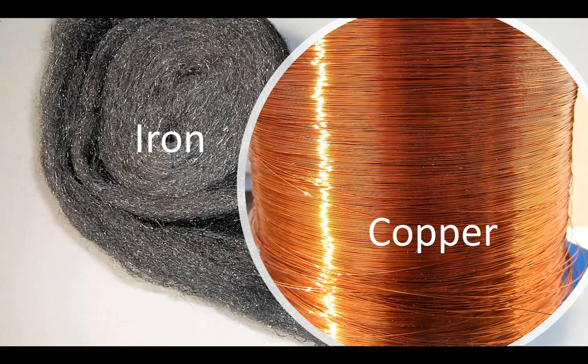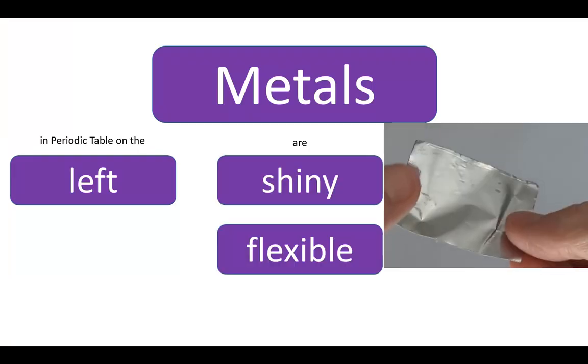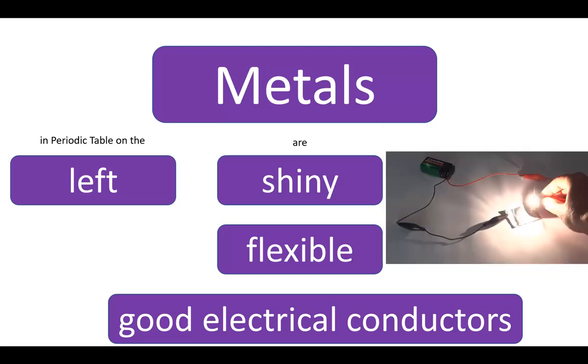Steel wool is made largely of the metal iron, and we use copper in electricity wires in our homes. Metals tend to be shiny, flexible, and good conductors of electricity.